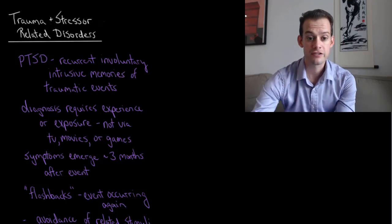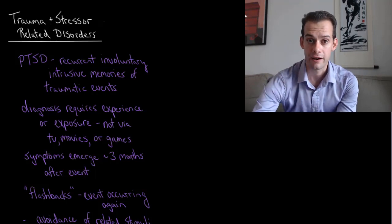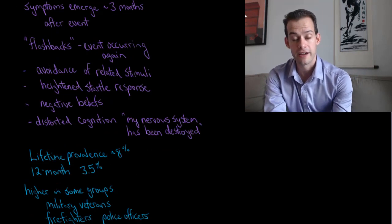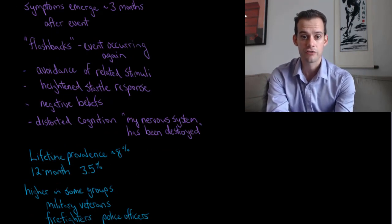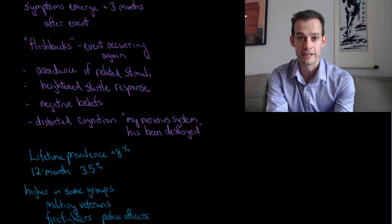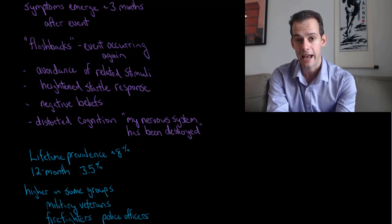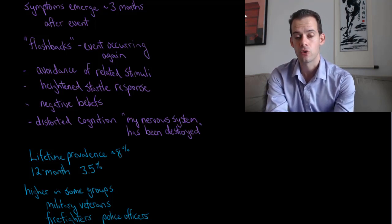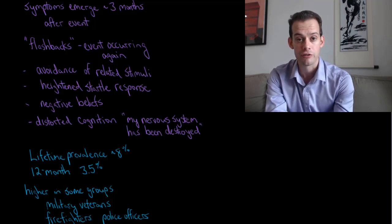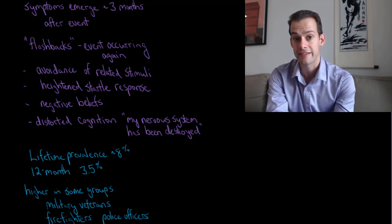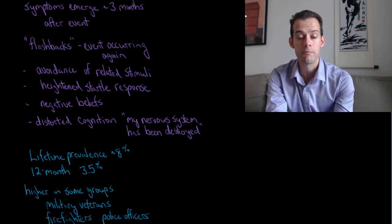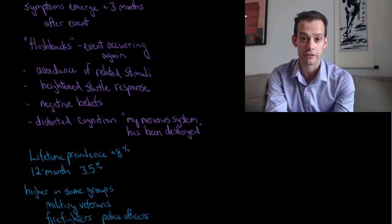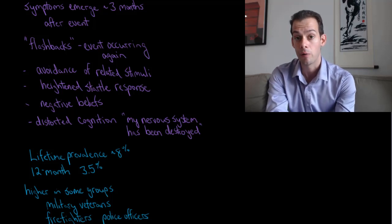These symptoms often emerge about three months following the traumatic event. One way this can occur is via what are called flashbacks, which refers to the person feeling like they are experiencing the event again — it's happening again, or they're reliving it. This is different from just recalling or ruminating over the event; the person actually feels it's happening again. This is often portrayed in popular culture as a military veteran who suddenly feels he's back on the battlefield when he's in a more mundane circumstance.